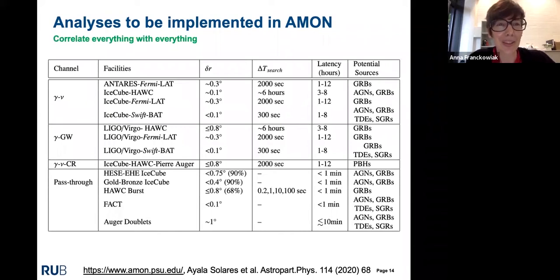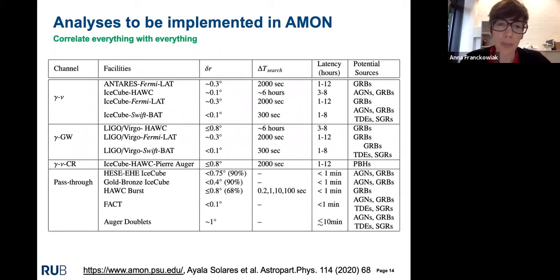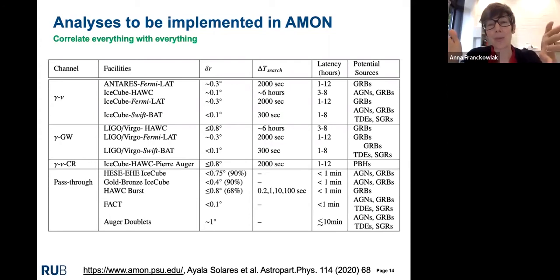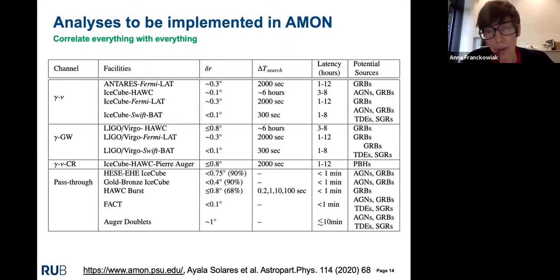AMON is planning correlations between gamma rays and neutrinos, gamma rays and gravitational waves, and gamma rays, neutrinos, and cosmic rays, plus a pass-through channel broadcasting interesting events from one observatory to the community. Each coincidence search defines a spatial radius based on the angular resolution of the instruments involved, and a time window to suppress background. Based on the time window chosen, the search is sensitive to various source classes.